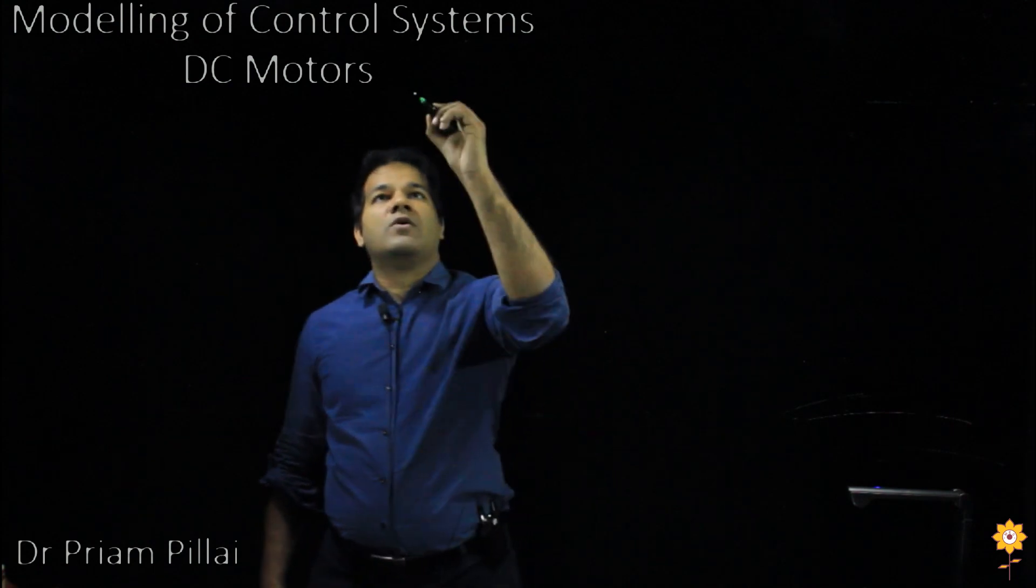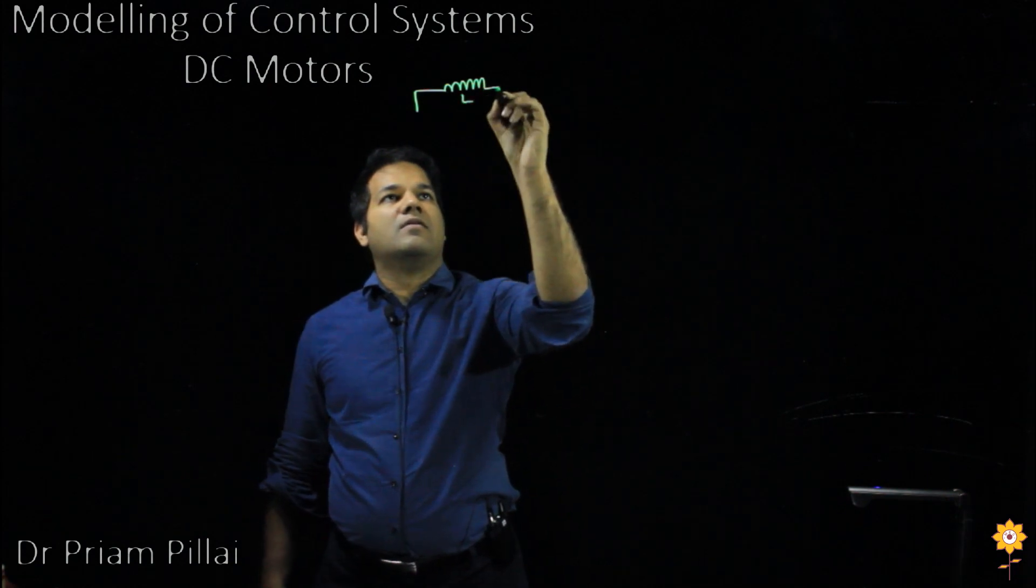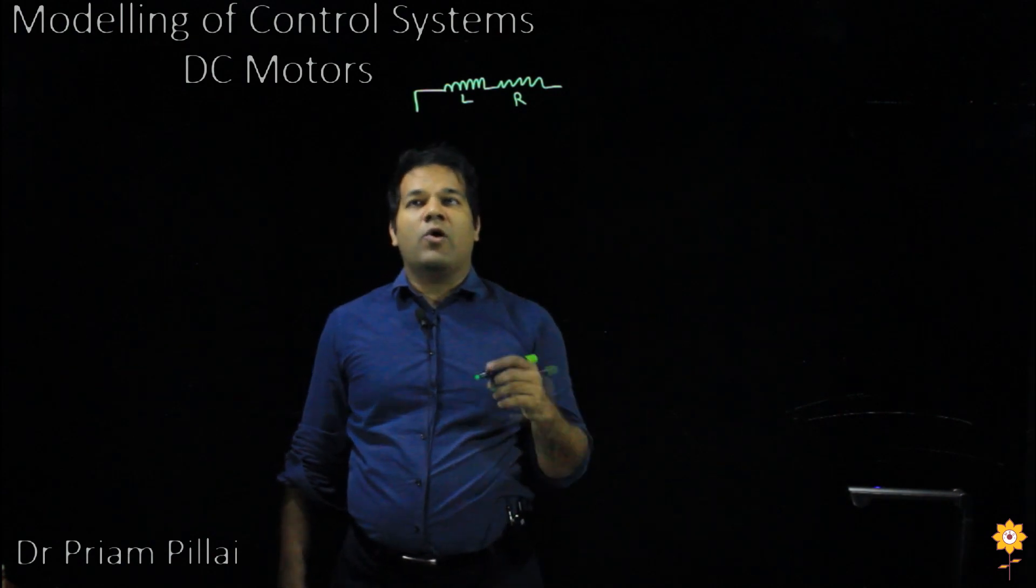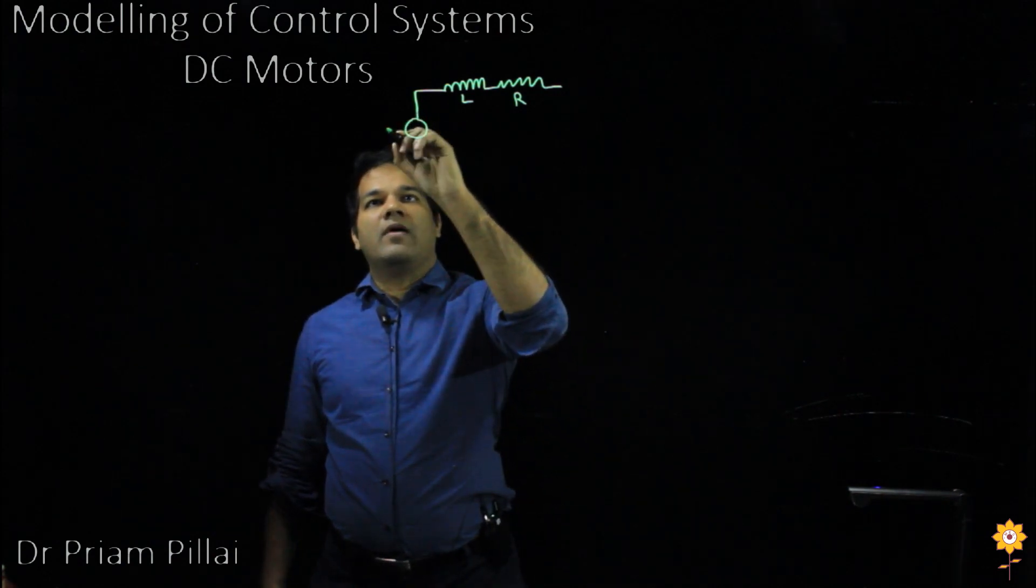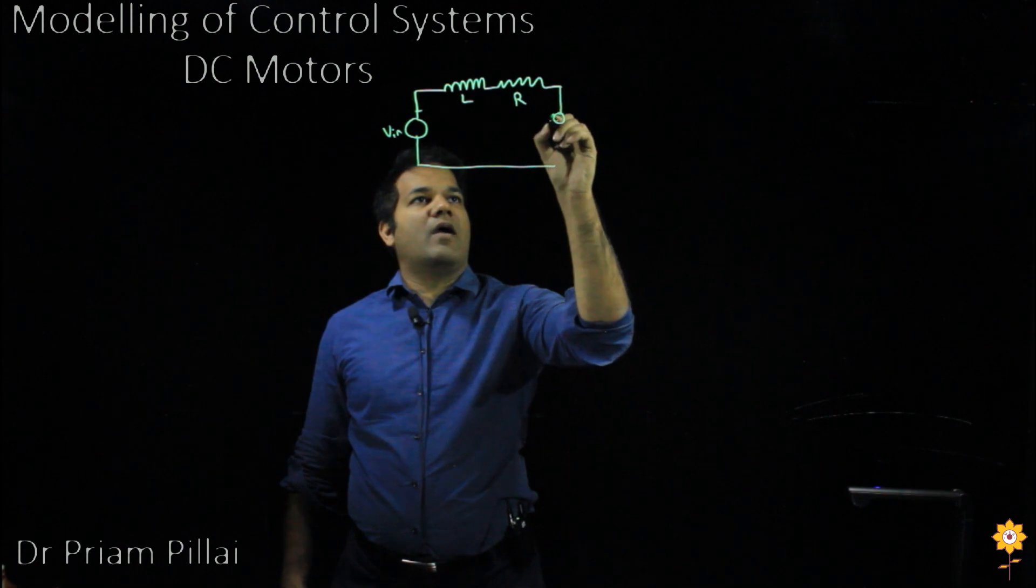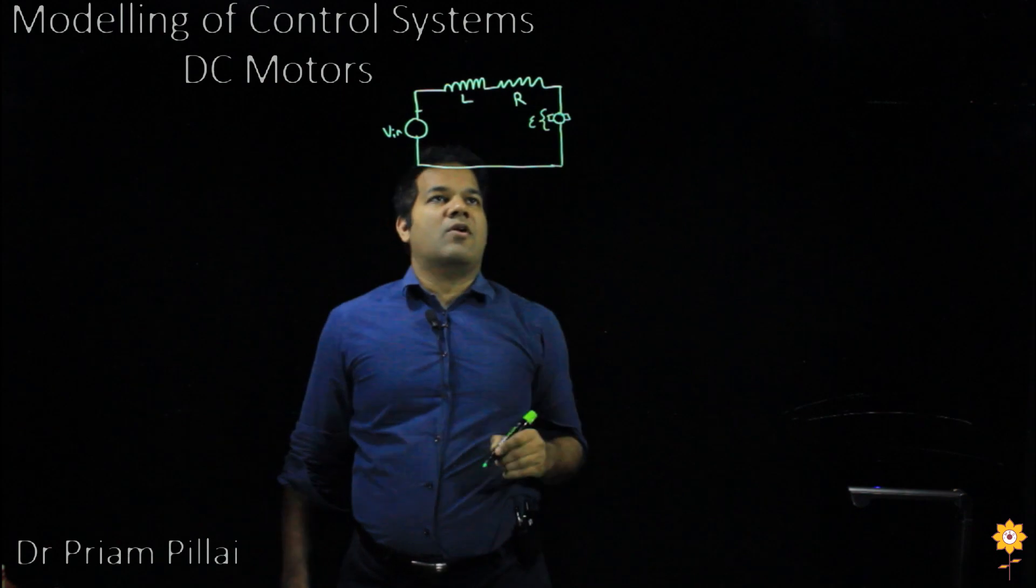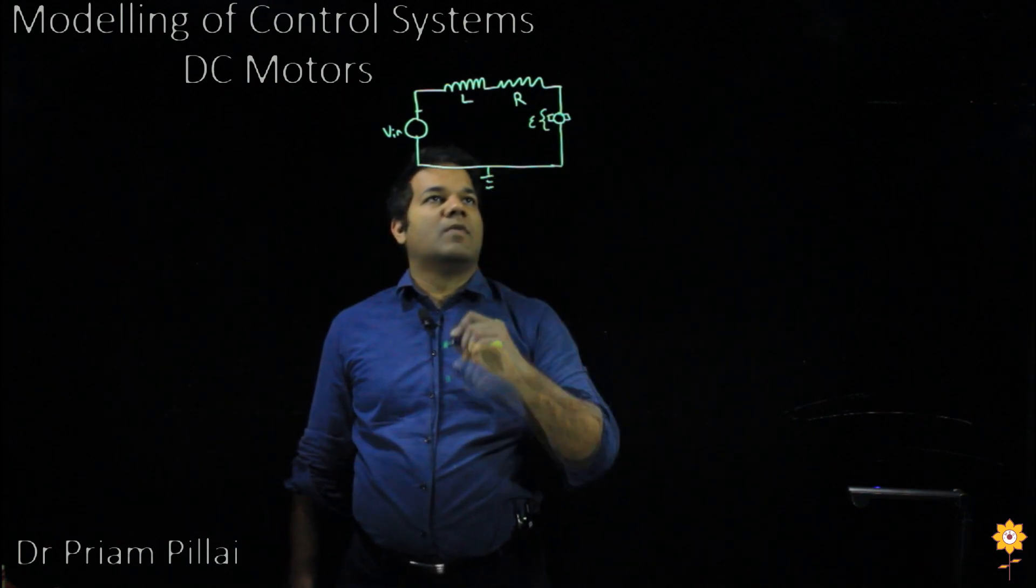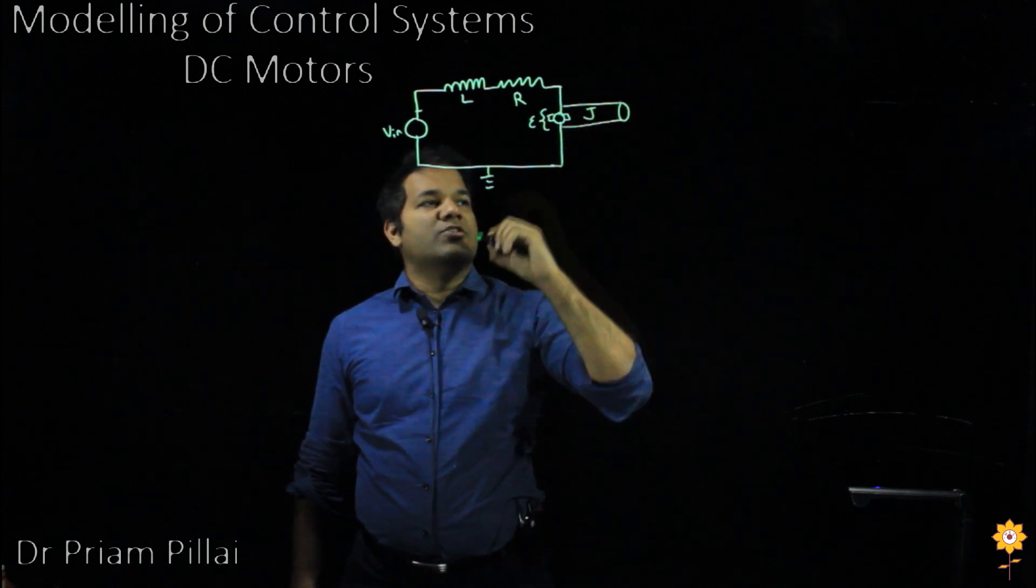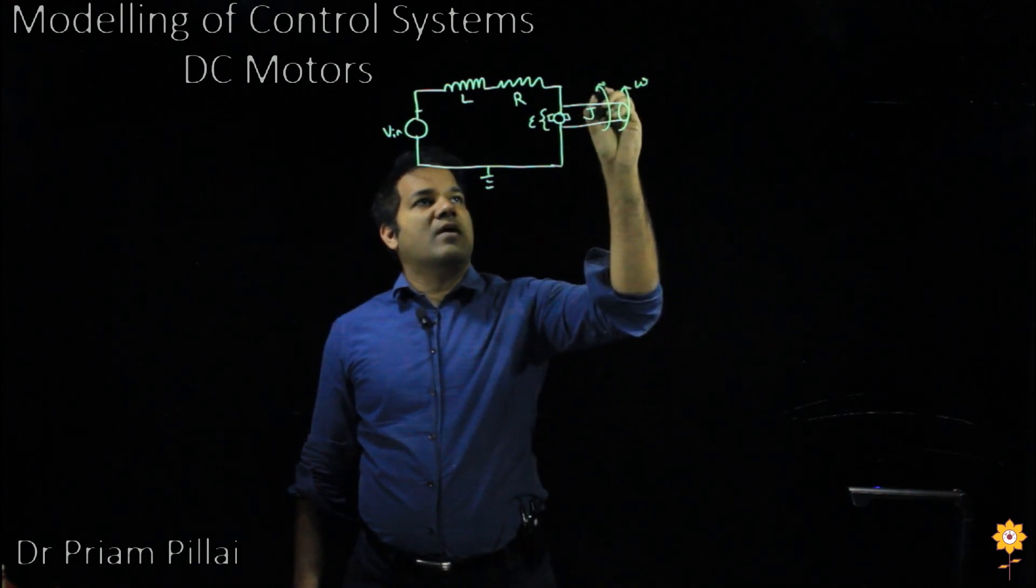A typical DC motor would consist of the following simple components: an inductor L and a resistance R that represent the inductance and the resistance of the coil in that motor. We would apply an input voltage V_in to this motor, and the motor would generate some kind of a back EMF epsilon. The motors also would have a shaft which would have a moment of inertia J and it would rotate at a speed omega and produce a torque tau.